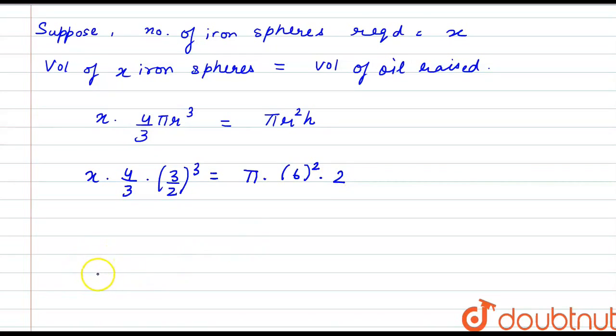So from here we have 4 by 3 pi into x into 3 by 2 whole cube is equal to 72 pi.